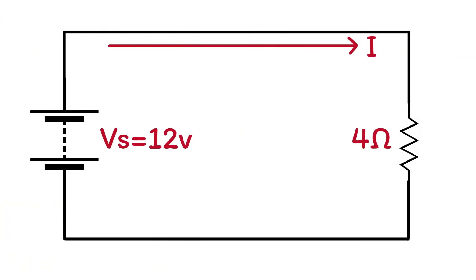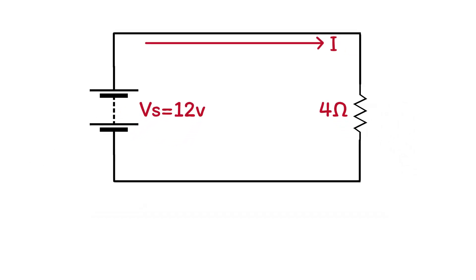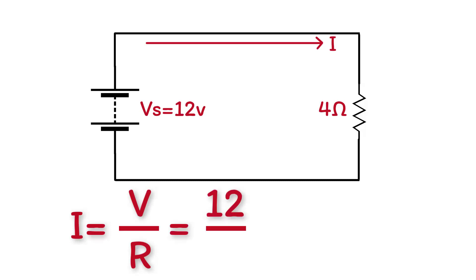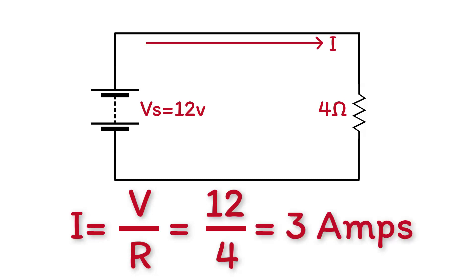Let's try a practical example. For a 12-volt battery and a 4-ohm resistor, we can calculate the current that passes through the resistor by applying Ohm's Law: I equals V over R, which gives 12 volts over 4 ohms, so current equals 3 amperes — the same current that passes through the circuit.